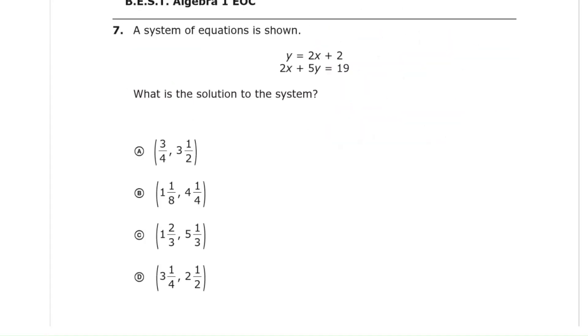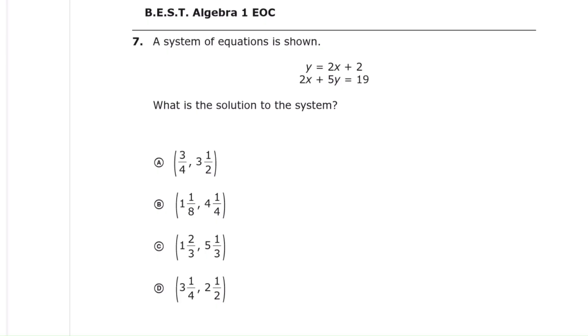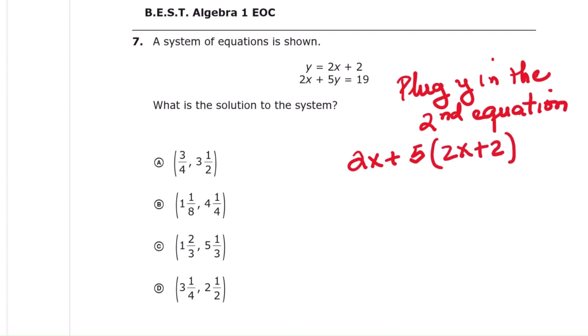Question 7, we are given a system of equations. The first equation says y equals 2x plus 2. The second equation says 2x plus 5y equals 19. Step 1, substitute the expression for y from the first equation into the second. That gives 2x plus 5 times 2x plus 2 equals 19. Step 2, multiply. That becomes 2x plus 10x plus 10 equals 19.